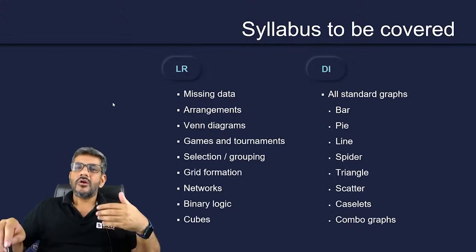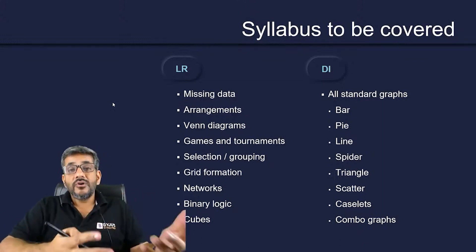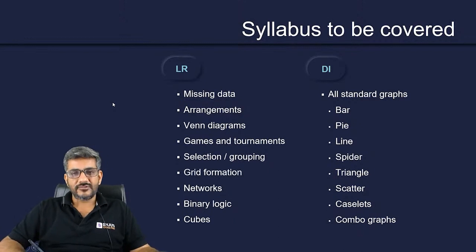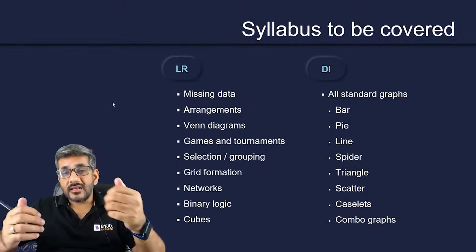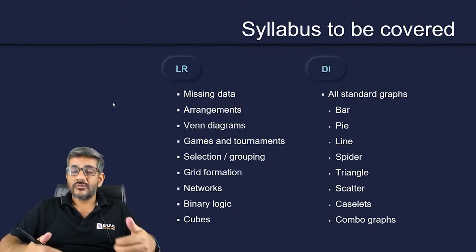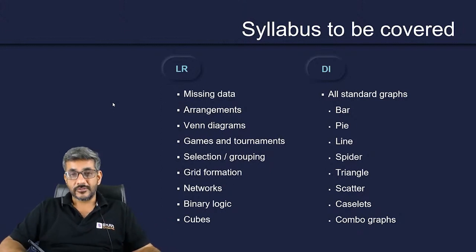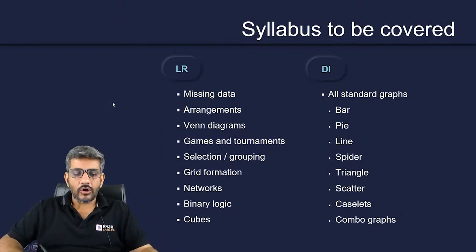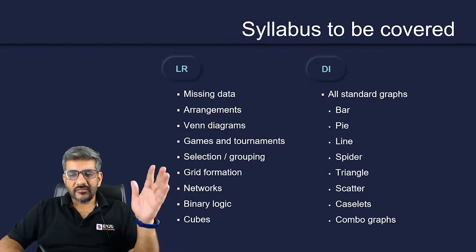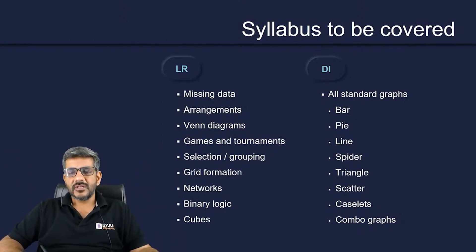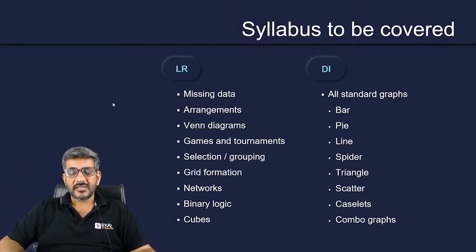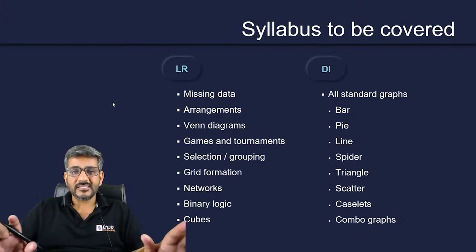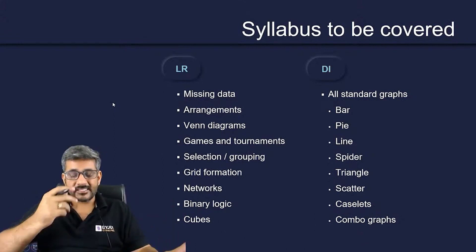It's about your logical reasoning. Improve your reasoning skills to do LR, and improve your calculation skills to do DI, including the interpretation skills as well. That's all that is needed. You can't say I've done all these types, I've done five sets of each type, so now I can expect a 99.5 percentile in my CAT exam. No, that's not necessary.